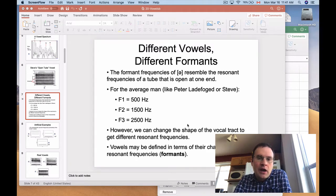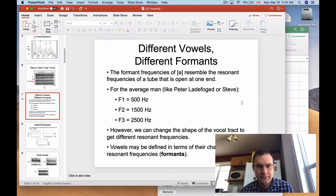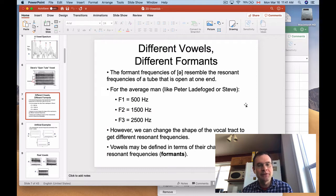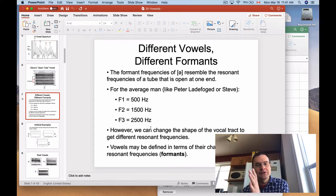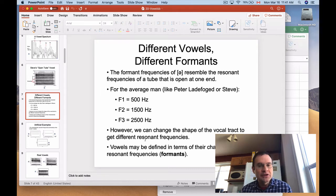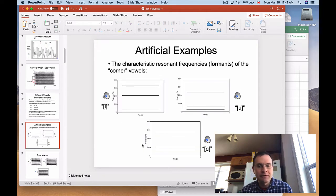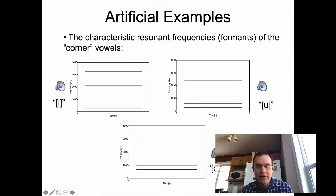Picking back up where we left off — for somebody with a vocal tract of my length, like myself or Peter Ladefoged, F1 would generally be 500 hertz for a default schwa vowel. F2 would be 1500 hertz, F3 would be 2500 hertz, just nicely evenly spaced apart from each other. But you can change the shape of the vocal tract to get different resonant frequencies, and we played around with this when we were creating these three sine wave vowels before.